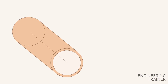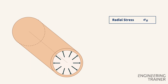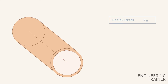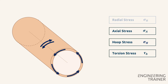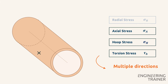In piping systems there are radial stresses, which are often neglected, axial stresses, the hoop stress, and the torsion stress, which is a shear stress. If we evaluate the stress state at a location in the material, we find that this stress state is determined by these stresses from multiple directions, so they form a three-dimensional stress state.